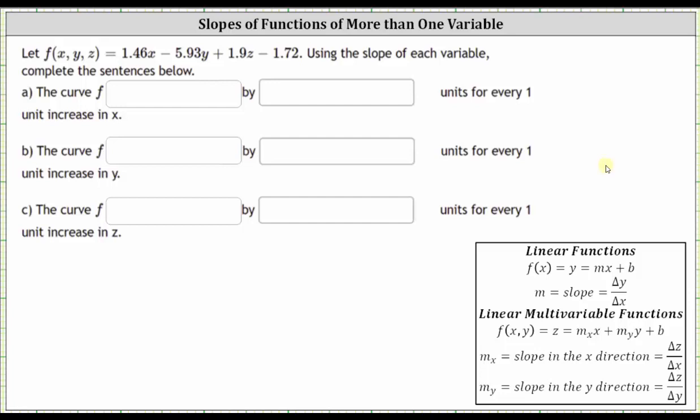We are given a linear function of three variables, f of x comma y comma z, and we're asked to use the slope of each variable to complete these sentences below. Before we do this, let's take a look at our notes below.